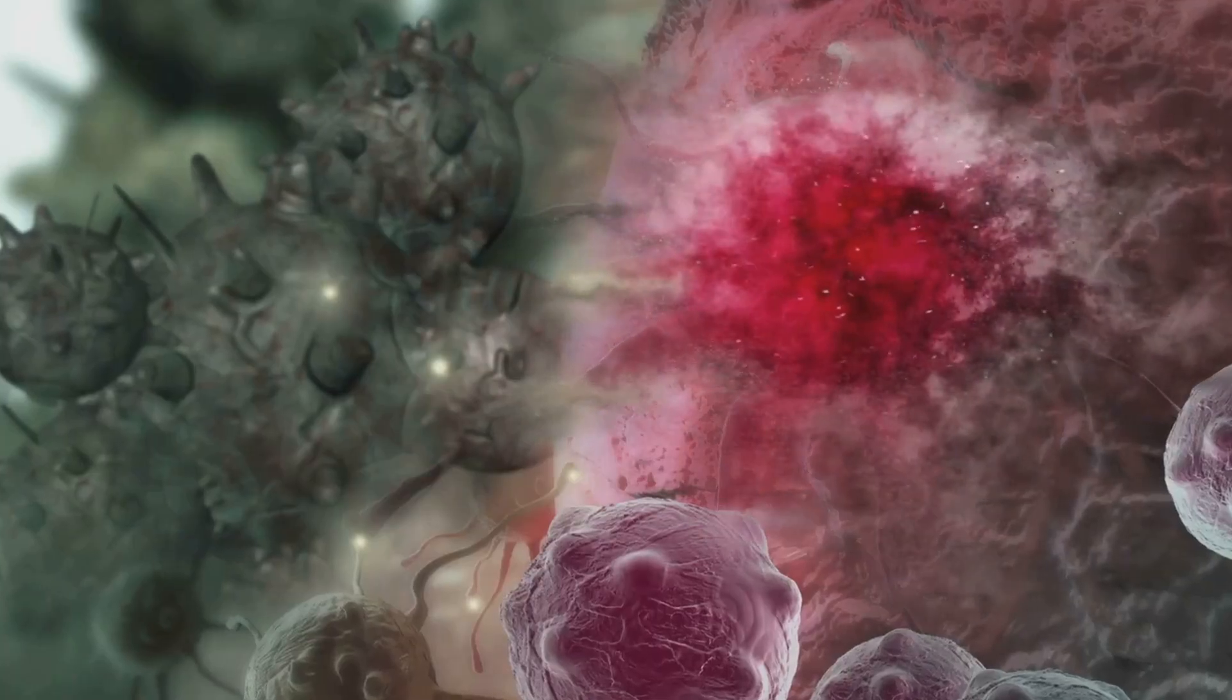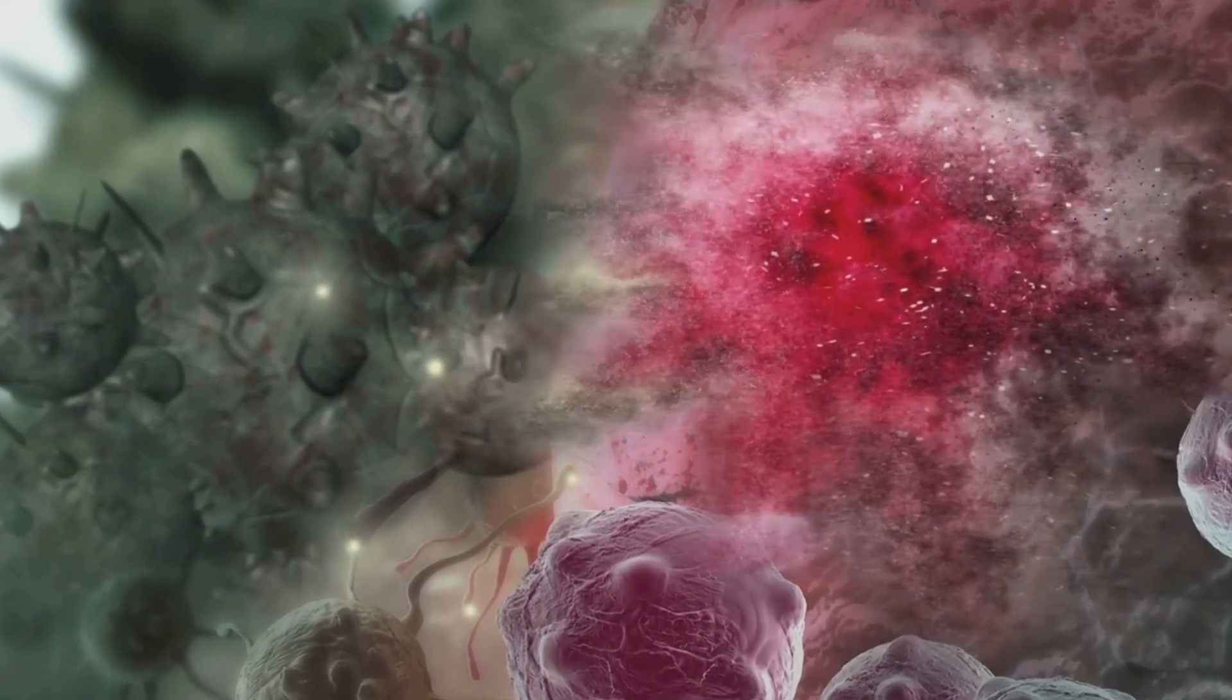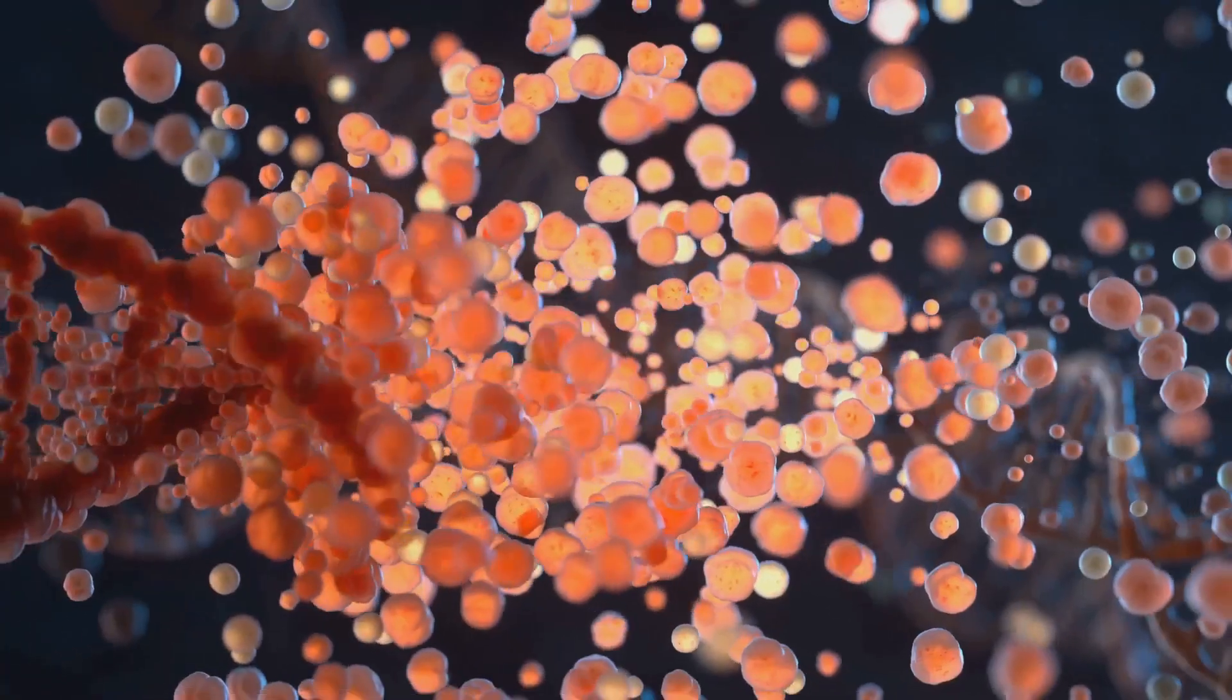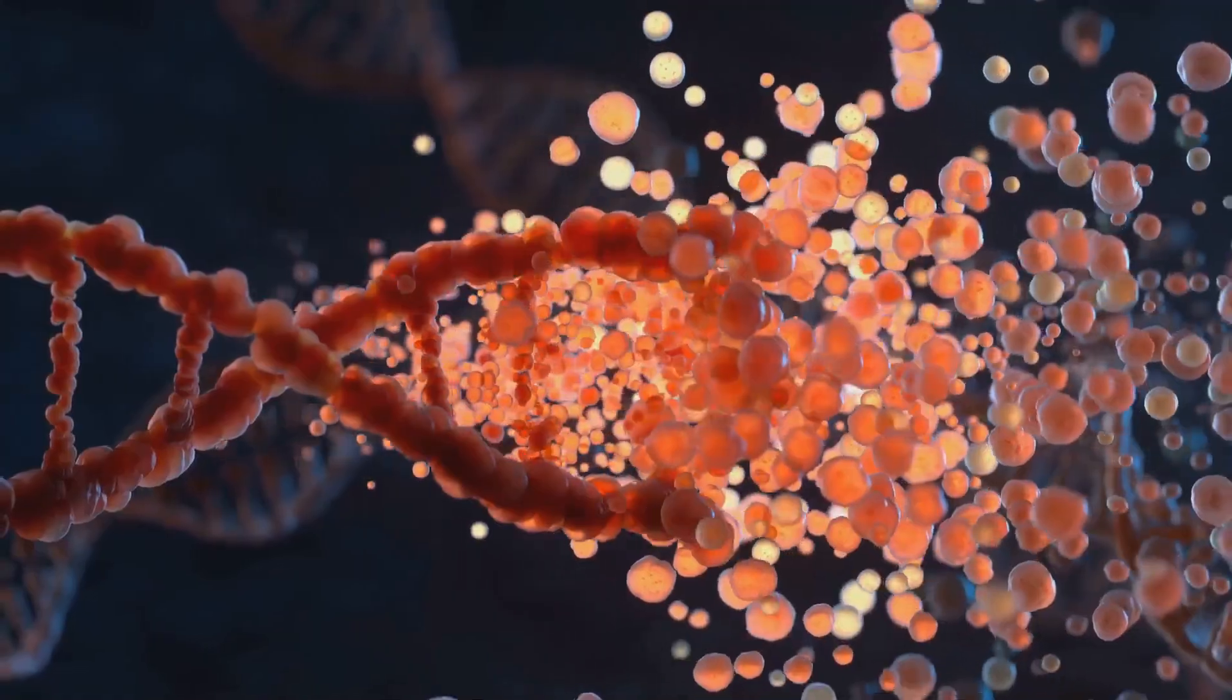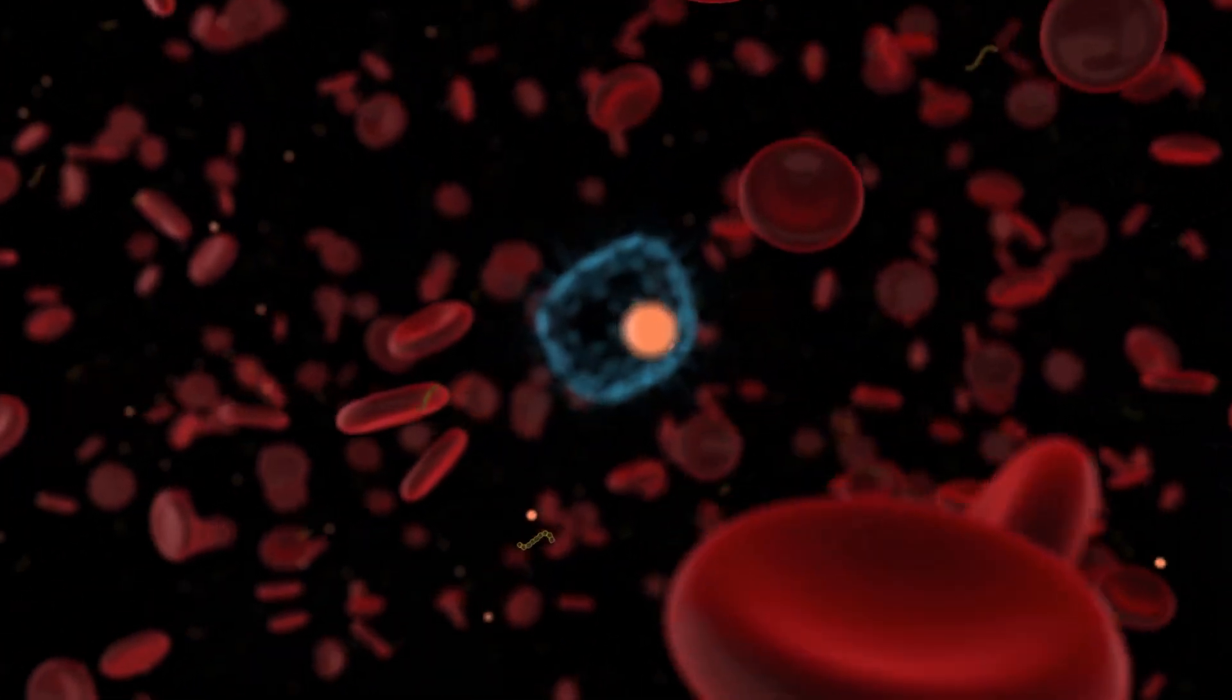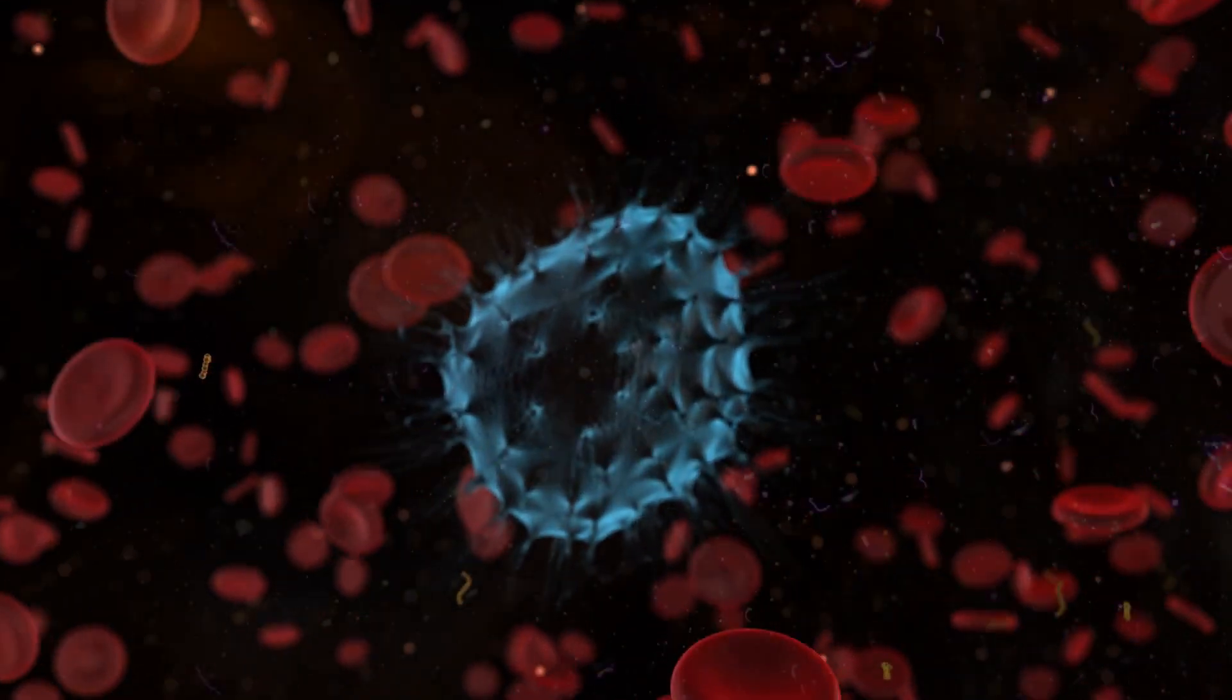Telomeres shorten with each cell division, acting as a cellular clock. When critically short, cells stop dividing or undergo apoptosis, preventing uncontrolled growth. Telomerase can lengthen telomeres, active in germ and stem cells and often in cancer cells. This enzyme allows cells to bypass division limits, leading to tumor growth.